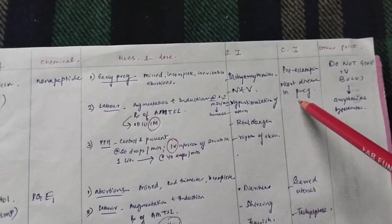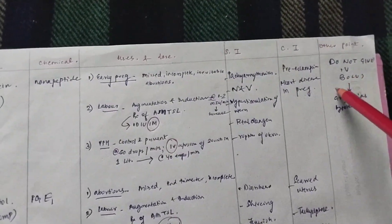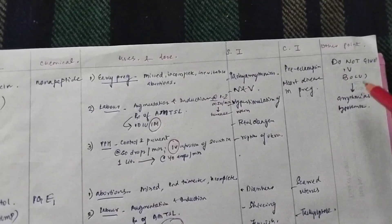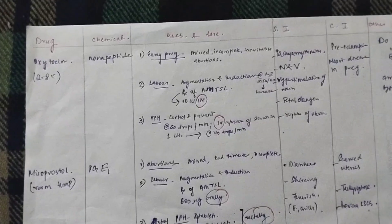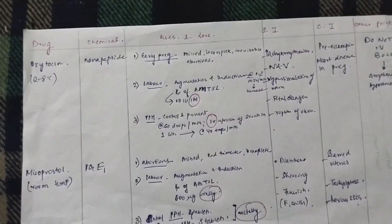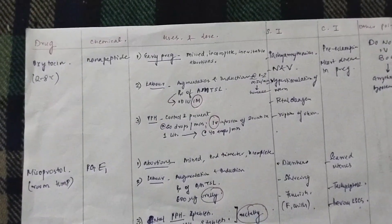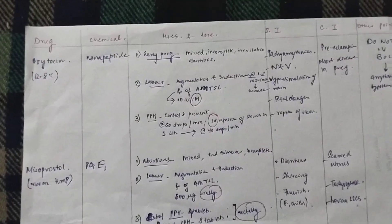And the point that you have to remember about oxytocin: do not ever use it IV bolus. Because that can cause hypertension and tachyarrhythmias. And you have to store oxytocin at 2 to 8 degrees Celsius. If you have read this much about oxytocin, you are clear to answer all the questions.